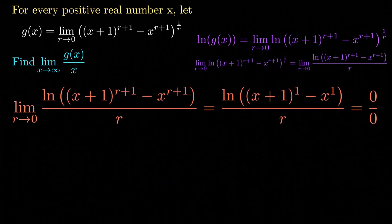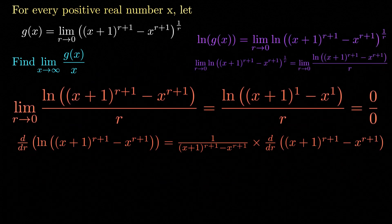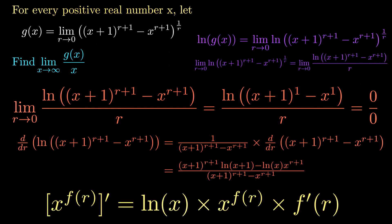Taking the derivative of the numerator: the derivative of the natural logarithm is 1 over its argument, multiplied by the derivative with respect to r of the argument. Using the standard identity, this gives us x plus 1 raised to r plus 1 times the natural logarithm of x plus 1, minus the natural logarithm of x times x raised to r plus 1, all divided by x plus 1 raised to r plus 1 minus x raised to r plus 1. The derivative of the denominator is just 1.